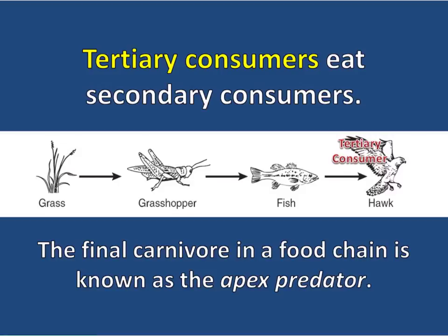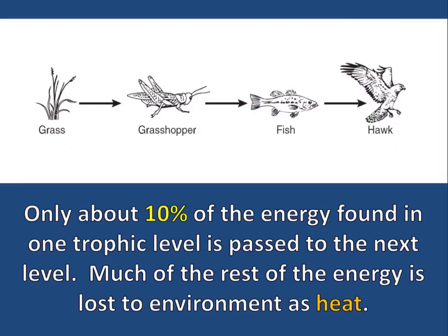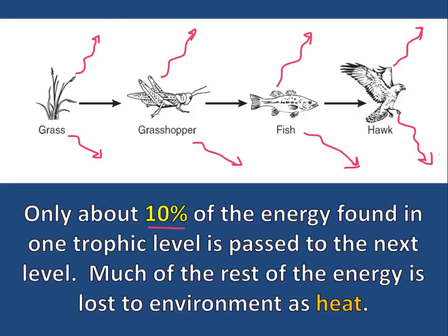Tertiary consumers eat secondary consumers. The final carnivore in a food chain is known as the apex predator. Only about 10% of the energy found at one trophic level is passed to the next level.